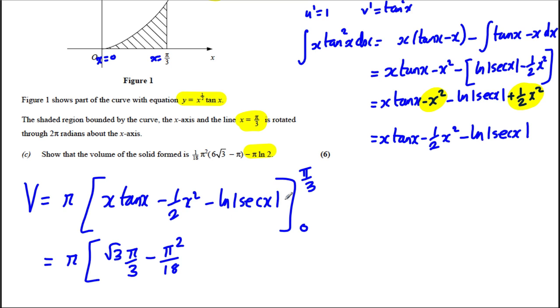Well, sec x is 1 over cos x. Cos of pi by 3 is a half. So 1 over half is 2. So this is going to be subtract ln 2. And subtract the answer when I put 0 in. If I put 0 here, I get 0. 0 here, I get 0. Put 0 in here. 1 over cos 0 is 1 and ln 1 is actually 0. So all of that is 0.